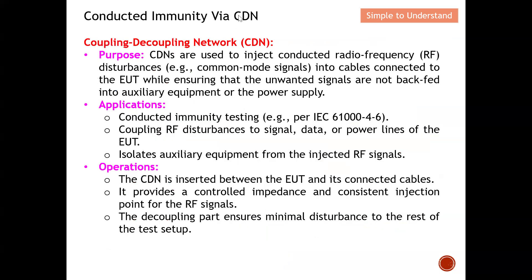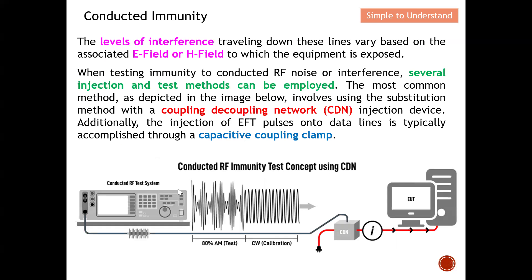Conducted immunity via CDN: the CDN stands for coupling decoupling network. Its key purpose is to inject conducted RF disturbances, which are common mode signals, into cables connected to the EUT, while ensuring that unwanted signals are not back-fed into the auxiliary equipment or power source. The CDN is inserted between the EUT and the noise source. The noise source is inserted into one port of the CDN, and the noise flows in one direction towards the EUT.